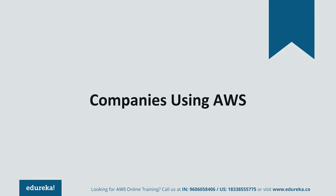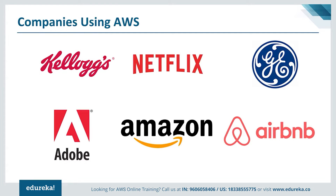Talking about companies who are on AWS, let's look at some of the prominent companies using the AWS infrastructure. These are some very popular companies like Kellogg's, Adobe, Airbnb, General Electric, Netflix, and Amazon, which are using the AWS infrastructure for their operations. Netflix and Amazon are completely dependent upon the AWS infrastructure. You can imagine that your application is going to share the same infrastructure as these apps, so your application is in safe hands.